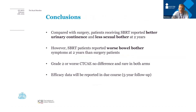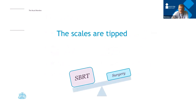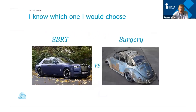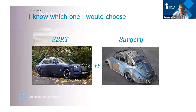In conclusion, compared with surgery, patients receiving SBRT reported better urinary continence and less sexual bother, while SBRT reported worse bowel bother symptoms at two years — though symptoms were minor. There was no difference in clinician-reported CTCAE toxicity. Efficacy data will come at the five-year mark, two to three years from now. In my view, the scales are tipped: SBRT is in many ways a preferable treatment, though radical prostatectomy still has a role. Patients should be shared this data — and, with a bit of humour, I know which one I would choose.